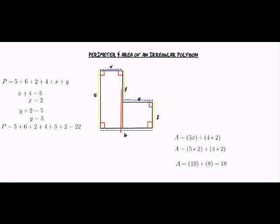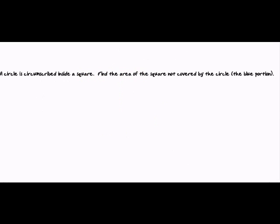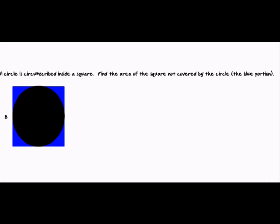Now, we're going to deal with one more area problem. Let's say we have a circle that's circumscribed inside a square. We've inscribed it into the square. We're going to find the area of the square not covered by the circle, which is going to be our blue portion in this diagram. Now, we can see that we have 8 labeled on the one side of the square, so we know all the sides of the square are 8, and we know our circle has a diameter of 8 because the circle hits the edges of the square, so a line going straight through the center of the circle would be 8. That means our radius is half the diameter. Half of 8 is 4.